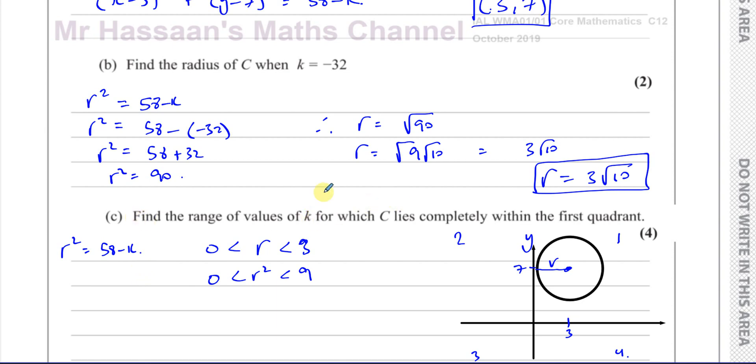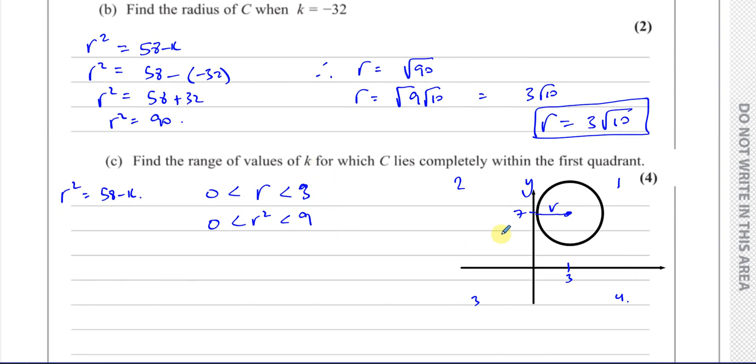Now part C, we're not taking k as -32. We have to find the values of k for which this new situation is true, that the circle is only within the first quadrant. So the radius must be less than 3 units, so r² must be less than 9. We can say that 0 has to be less than 58 - k, which is r², and that has to be less than 9.